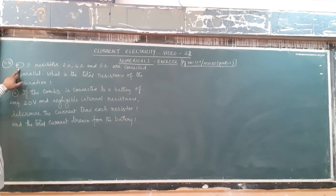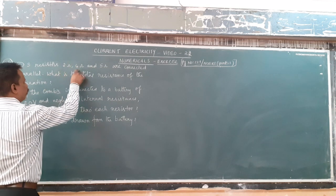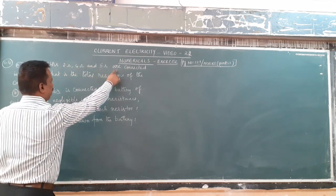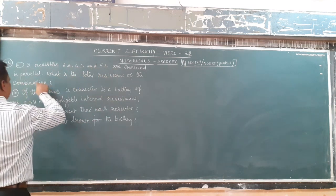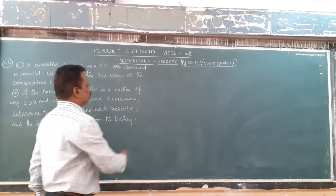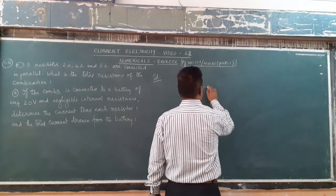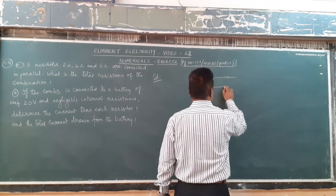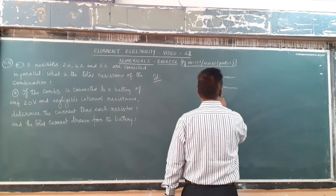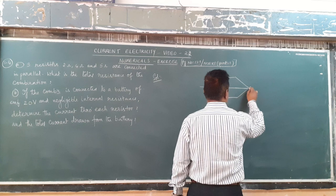This is numerical 3.4, which says that there are 3 resistors — 2 ohm, 4 ohm, and 5 ohm — connected in parallel. What is the total resistance of the combination? So there are 3 resistances connected in parallel. Let us take the 3 resistances: 2 ohm, 4 ohm, and 5 ohm. These 3 are connected in parallel like this.